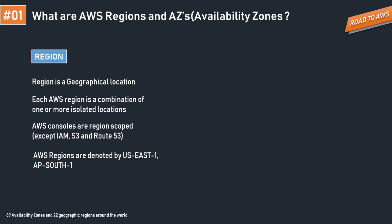AWS regions are separate geographic areas that AWS uses to house its infrastructure. These are distributed around the world so that customers can choose a region closest to them in order to host their cloud infrastructure. The closer the customers are to the region, the better, because you can reduce network latency as much as possible for your end users. That's one of the most important things to remember as a solutions architect.